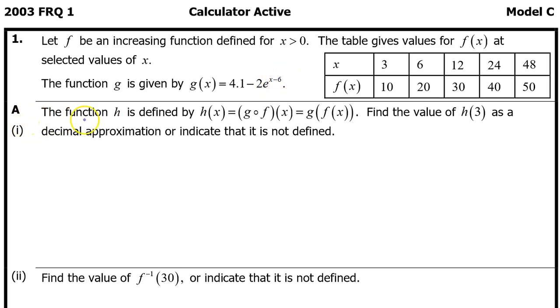Part A1. The function h is defined by h of x equals g of f of x. This notation is equivalent to this notation. Find the value of h at 3 as a decimal approximation or indicate that it is not defined.